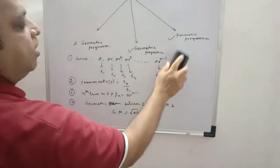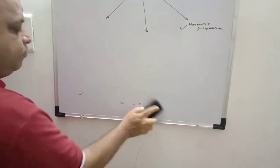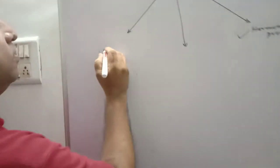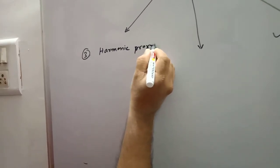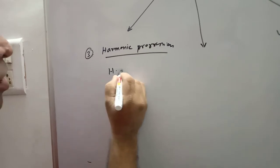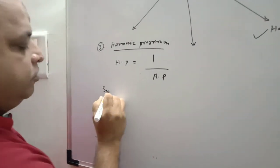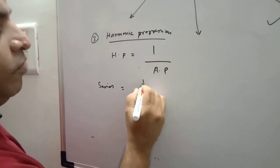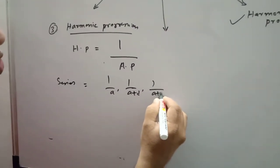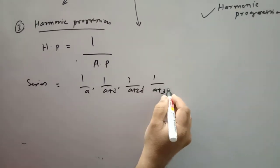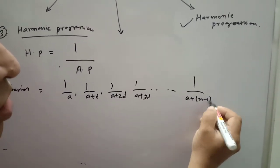And the last, we are discussing about harmonic progression. Harmonic progression is very easy. HP is the third one. HP is equal to the reciprocal of AP. The series of HP is: 1 by a, 1 by a plus d, 1 by a plus 2d, 1 by a plus 3d, and so on. The last term — the nth term — is 1 by a plus n minus 1 into d. This is called the last term.